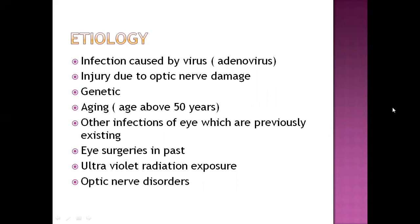Genetic factors: refractive errors can be genetically inherited from parents to offspring. Aging: when the age is above 50 years, patients begin to face degeneration of tissues, and because of degeneration of optic tissues, there is abnormality in the shape of the eye.